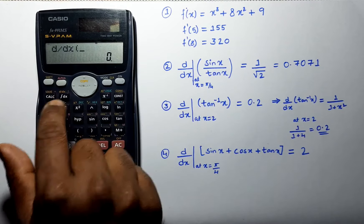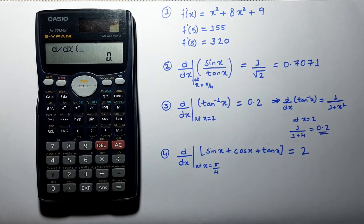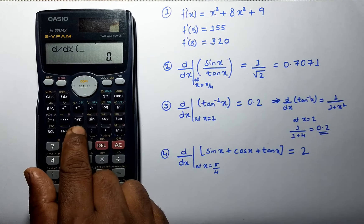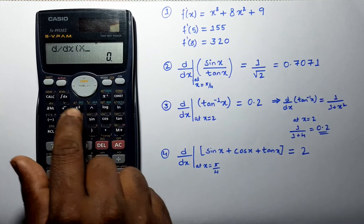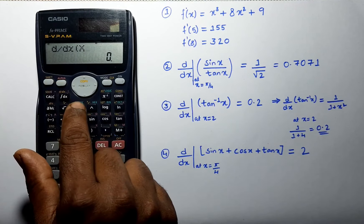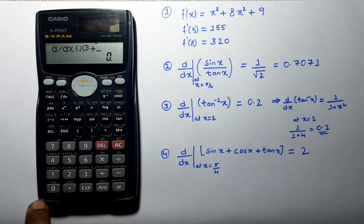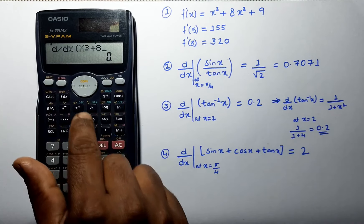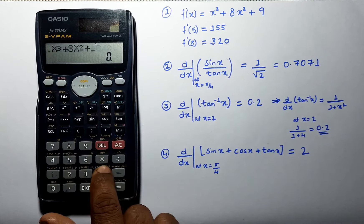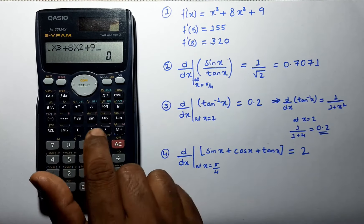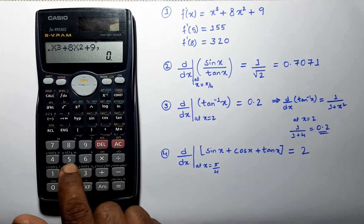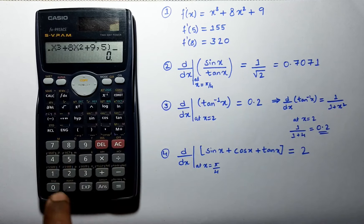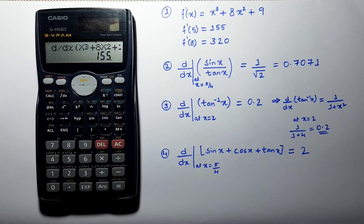Select d by dx of x cube plus 8 x square plus 9, enter the endpoint value which is 5 and press equal to. We will get the answer as 155.